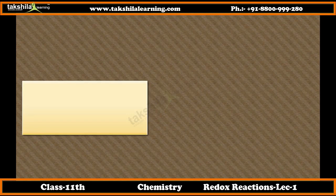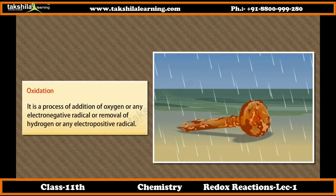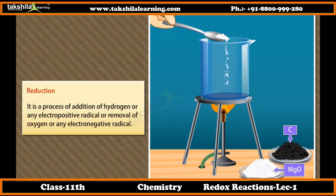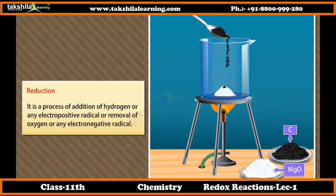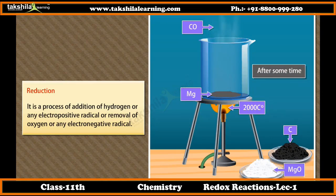Classical idea of redox reactions. Oxidation is a process of addition of oxygen or any electronegative radical, or removal of hydrogen or any electropositive radical. Reduction is a process of addition of hydrogen or any electropositive radical, or removal of oxygen or any electronegative radical. Let us take some examples for a better understanding of redox reactions.